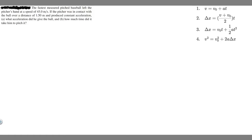In this problem, we're told the fastest measured pitched baseball left the pitcher's hand at a speed of 45 meters per second. If the pitcher was in contact with the ball over a distance of 1.5 meters and produced constant acceleration: A, what acceleration did he give the ball, and B, how much time did it take him to pitch it?